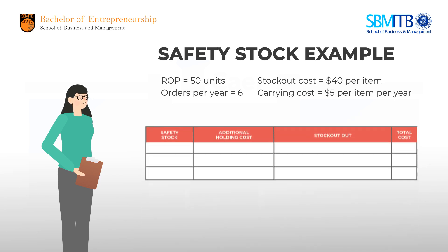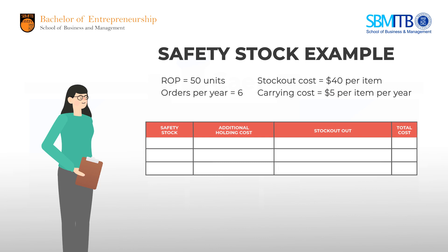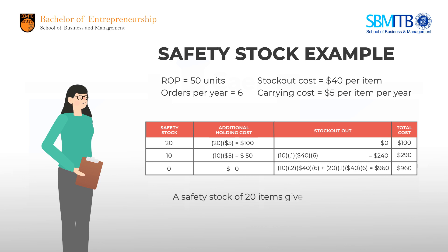The next column shows the amount of safety stock that minimizes the sum of the additional inventory holding costs and stockout costs. For each safety stock level, Linda computes the additional holding cost, stockout cost, and total cost. The safety stock of 20 items gives the lowest total cost.